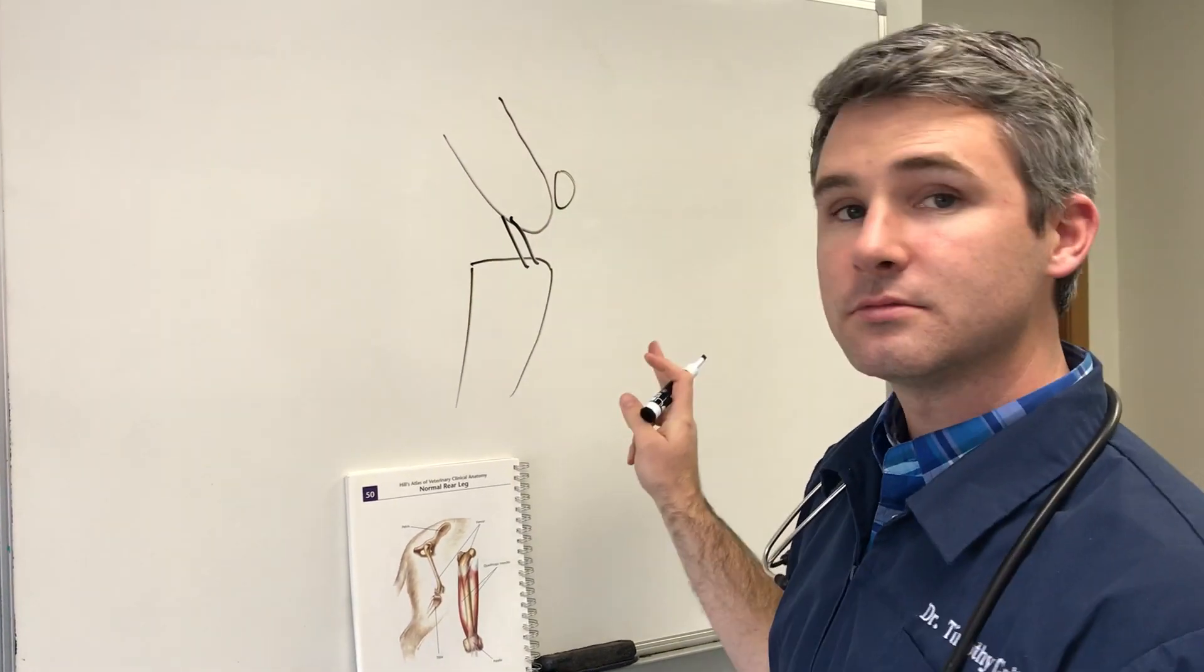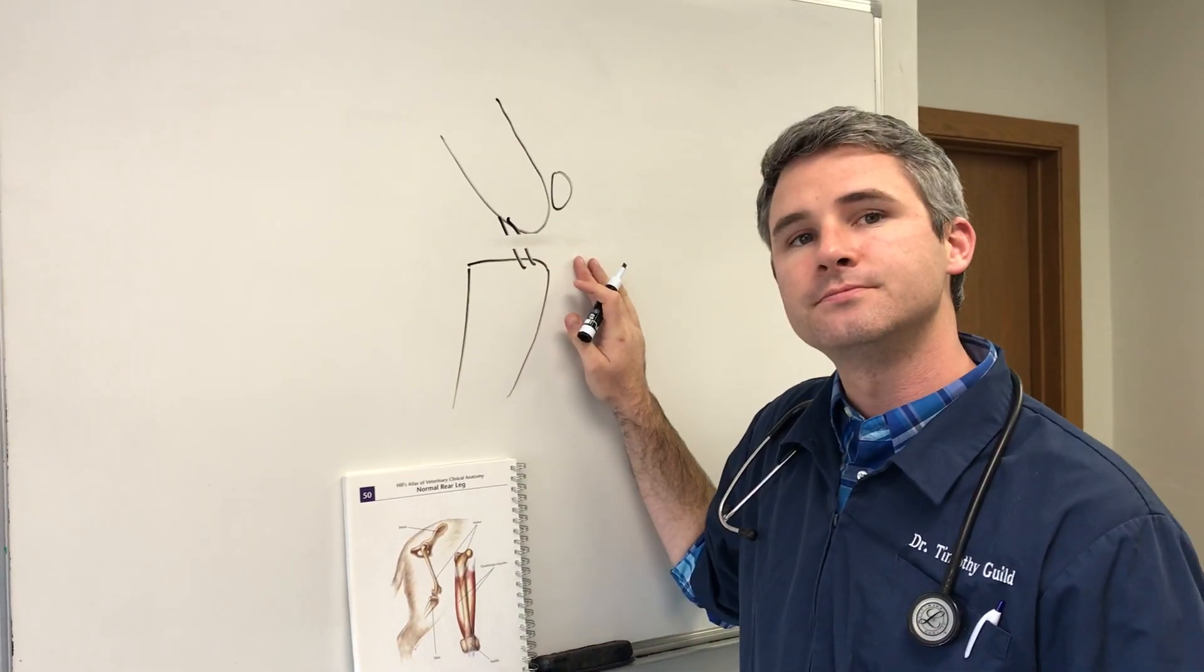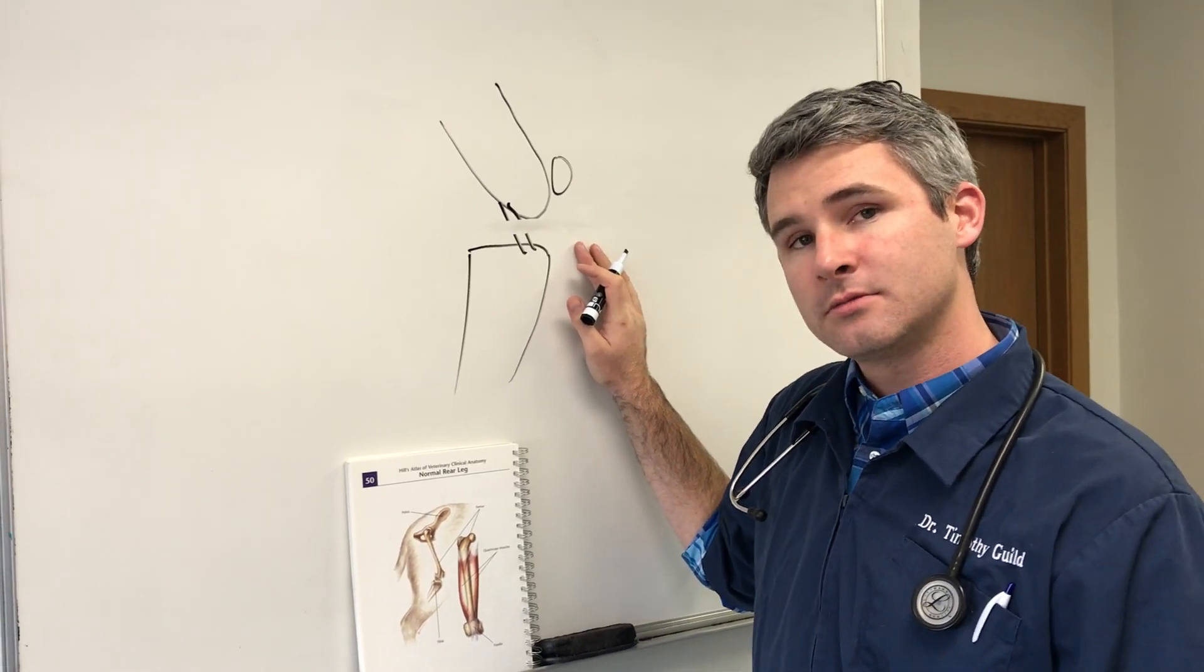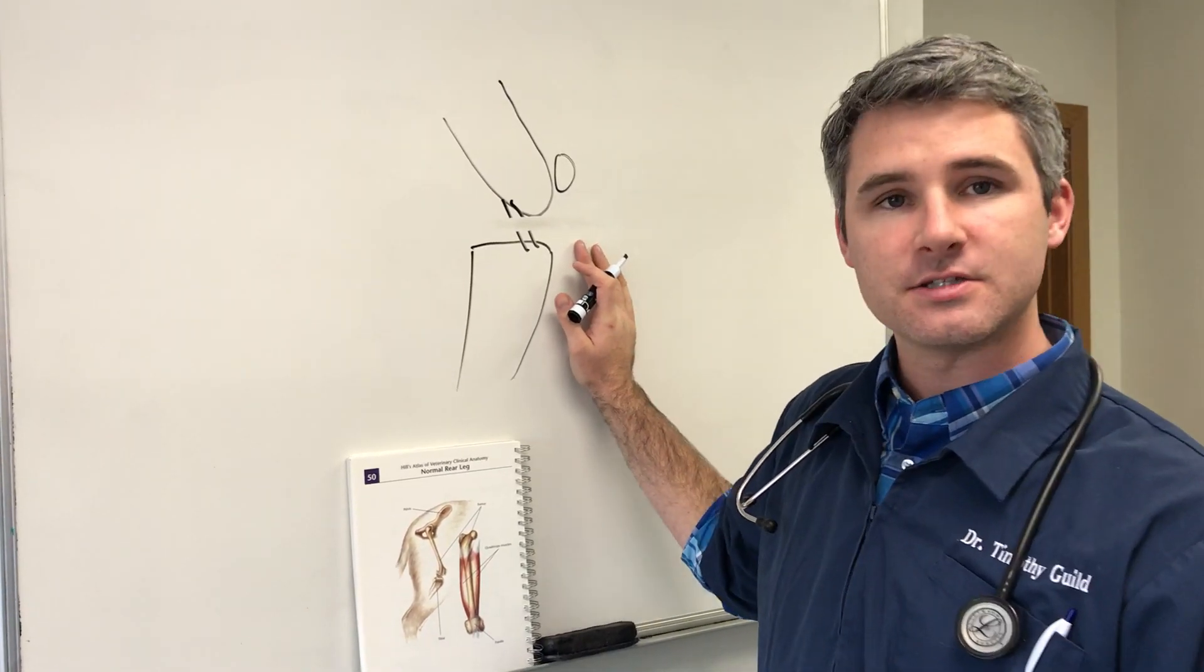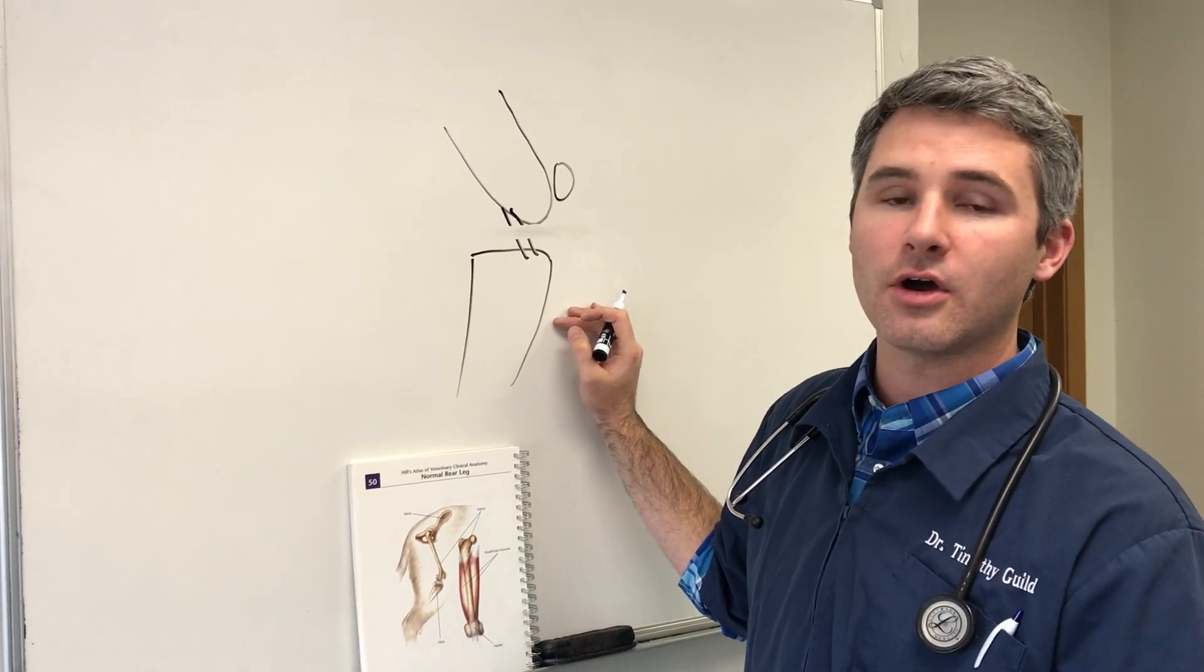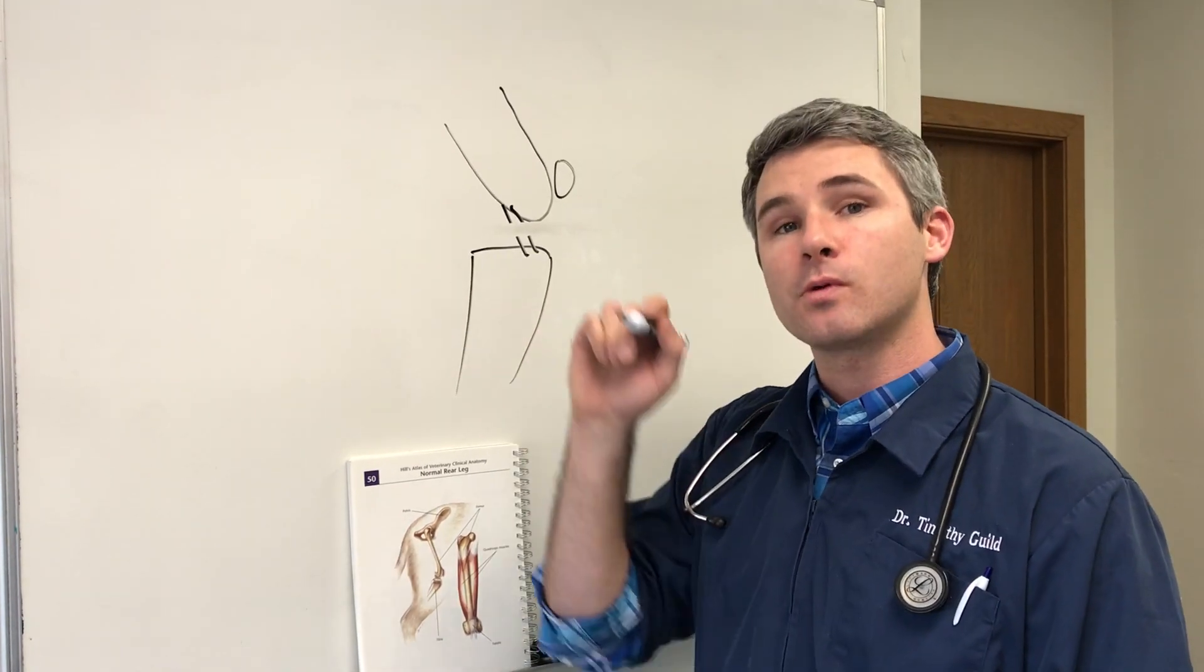If you have torn it, it's no longer intact. It makes this very unstable. If your dog is non-weight bearing on its rear leg, there's a very good chance that this might be what's wrong. Radiographs help us to diagnose and rule out other problems. Let's talk about how we repair it.